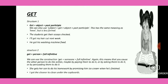Next causative verb is 'get'. Structure one: get plus object plus past participle. Children, we can also use subject plus get plus object plus past participle. This has the same meaning as 'have', but it is less formal.